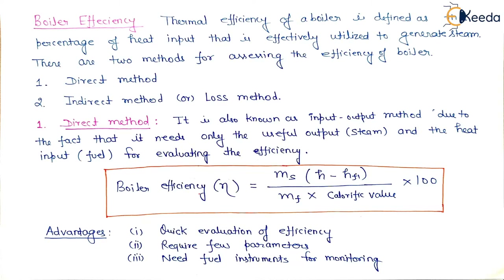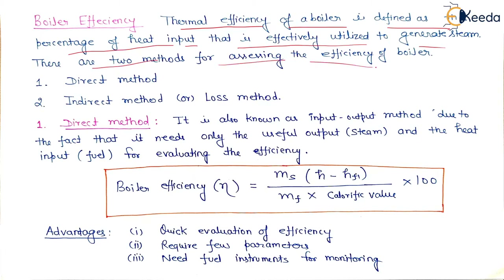Now let's see boiler efficiency. Boiler thermal efficiency is defined as the percentage of heat input that is effectively utilized to generate steam. There are two methods for assessing boiler efficiency: the direct method and the indirect (loss) method.